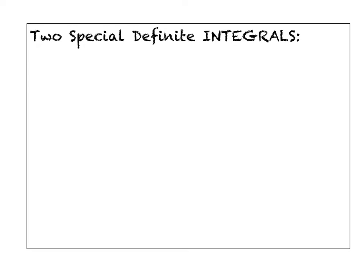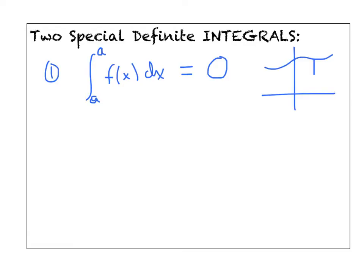We've had some really good practice using the first fundamental theorem to evaluate a definite integral algebraically. Now I want to introduce two really special definite integrals. Integral number one: what if the lower bound is some number a and the upper bound is the exact same number — say, integrating from 2 to 2, or from 5 to 5? How much area are you actually measuring if the upper and lower bounds are the same? Hopefully you can visualize and convince yourself that the answer is guaranteed to be 0, because we haven't created any space between those two bounds.